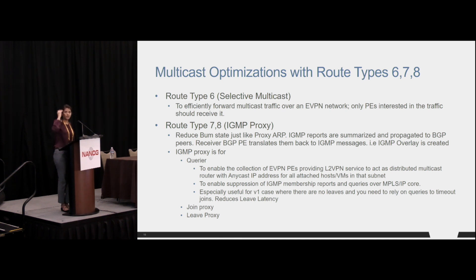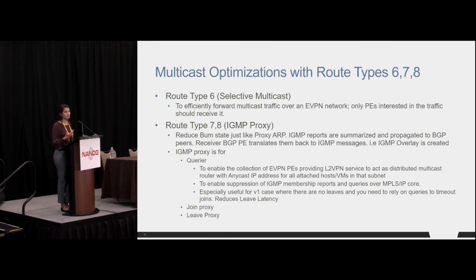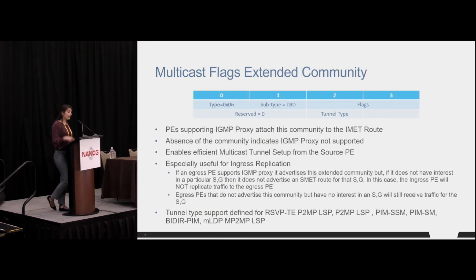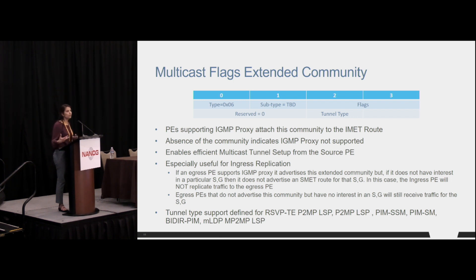The DF performs IGMP snooping and IGMP proxy functions, acting as an IGMP querier in the access segment to keep the IGMP machinery flowing — converting BGP messages to IGMP joins, that kind of thing. To get all this started, you must advertise a multicast flags extended community as part of your IMET route. When you advertise this community, you're indicating you'll participate in IGMP proxy optimizations and advertise the new route types: SMET and route types seven and eight.